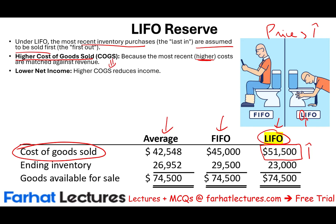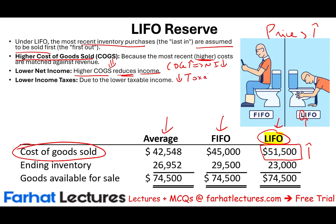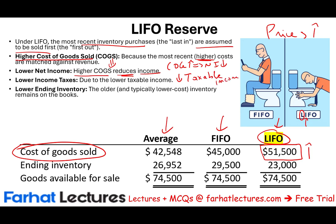Higher cost of goods sold leads to lower net income and lower taxable income. This means LIFO helps you save money on your taxes, because you are reporting less profit. It also results in lower ending inventory — for example, $23,000 under LIFO versus $29,500 under FIFO and $26,952 under the average method.